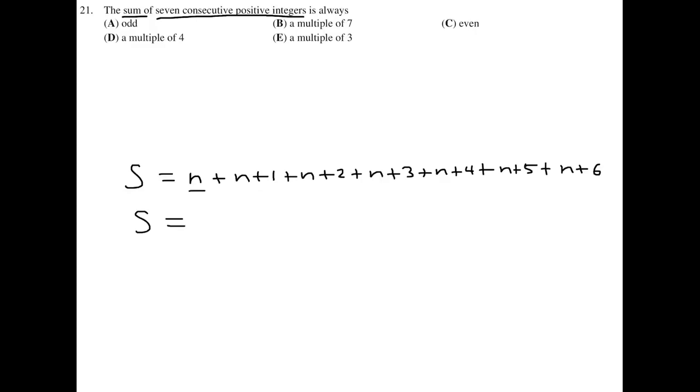So let's add them. How many n's do we have? We have seven n's. And then we have to add 1 plus 2 plus 3 plus 4 plus 5 plus 6. And that is 21. So at this point, we can factor a seven. And that would give us 7 times n plus 3. So whatever S is, whatever this sum is, it's always going to be a multiple of seven.